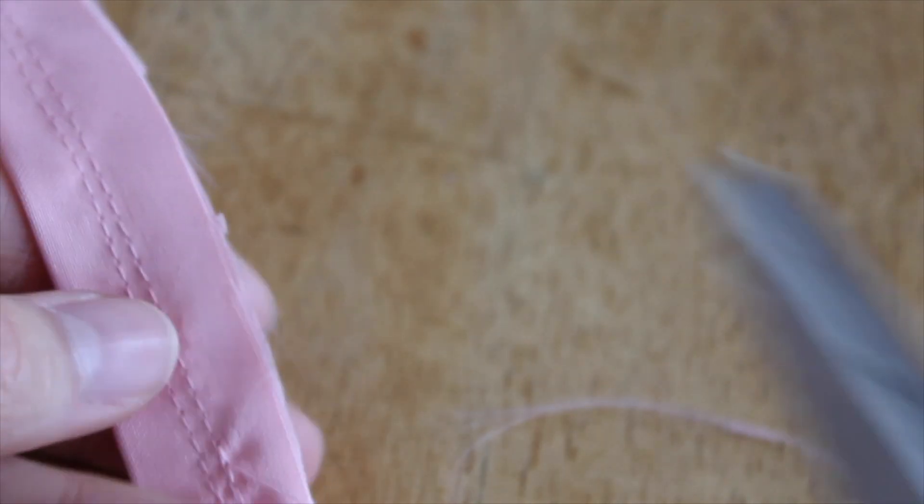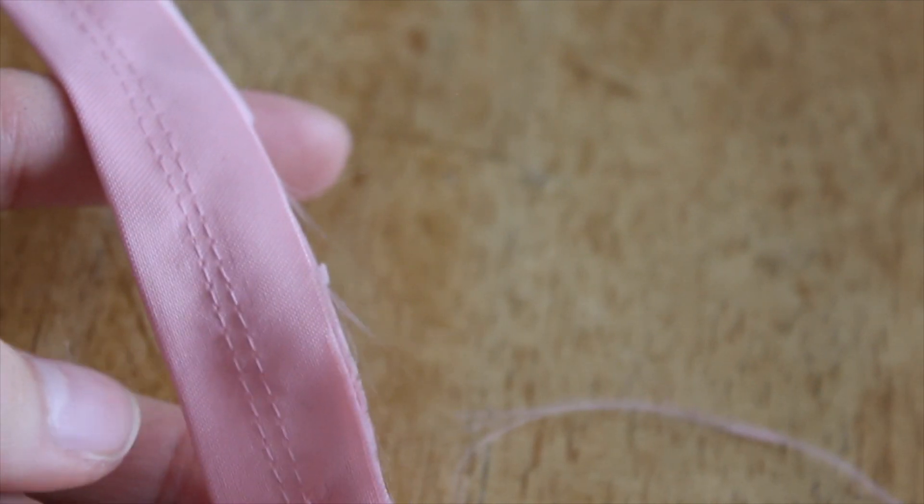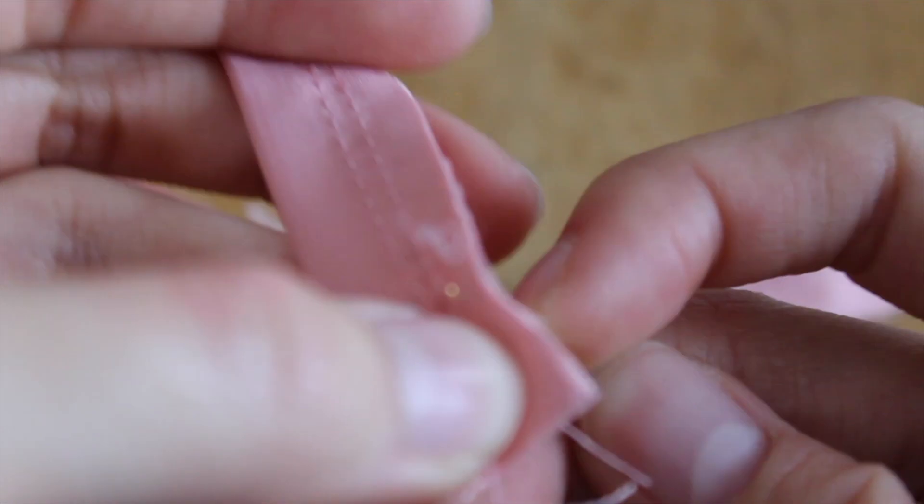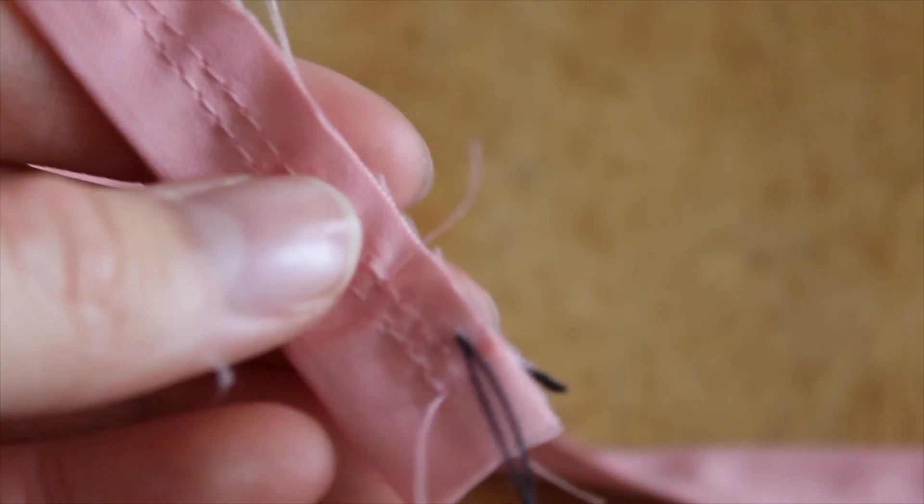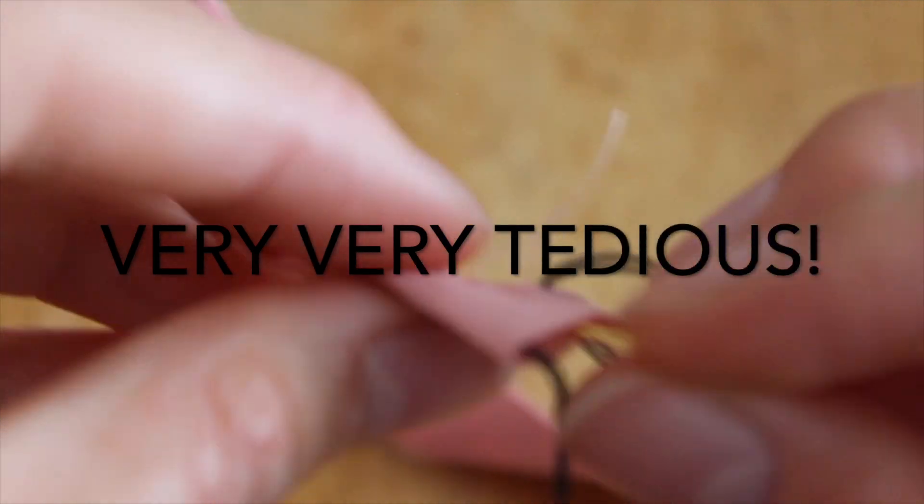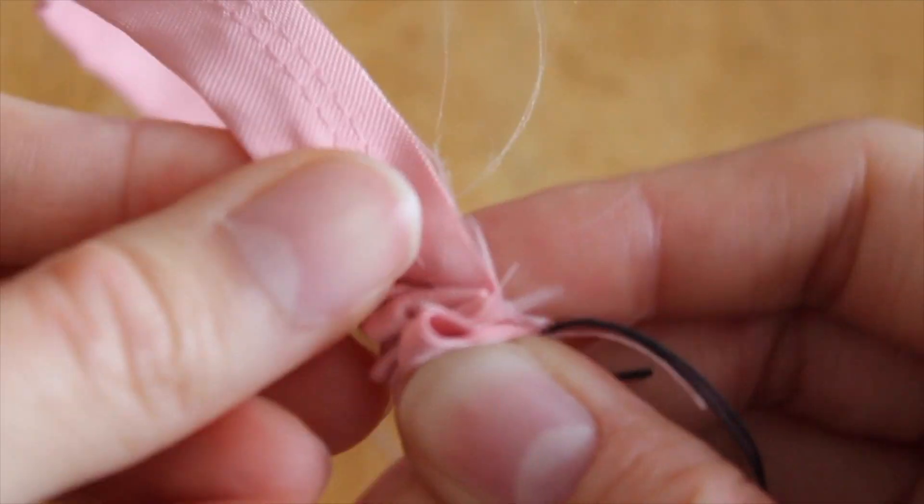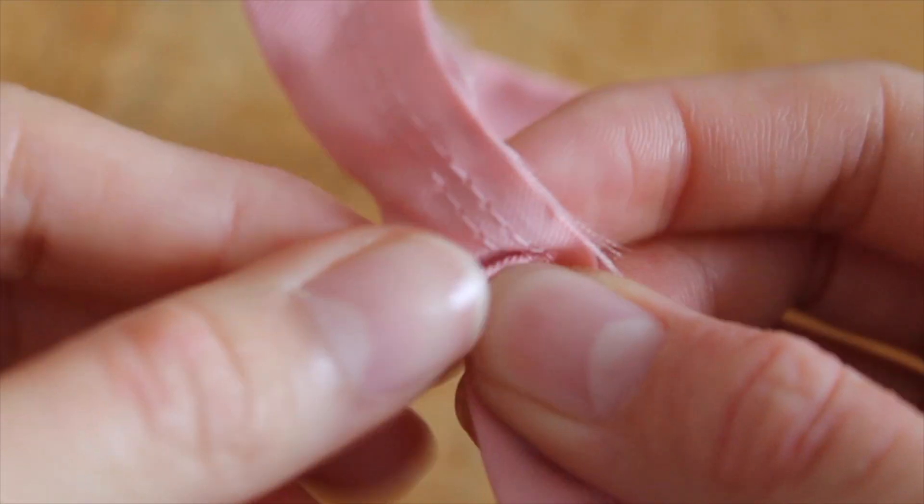I trimmed off a bit of the excess fabric just to make it easier when turning it around. Next I took a needle and some strong thread and secured it with a few knots at the end. I then took the needle and threaded it through the bottom corner of the strap and fed the needle through the tube. This is a very tedious process, and the hardest part is feeding the front part through the tube. But once that's done, it gets a lot easier and it just takes a lot of time and patience.